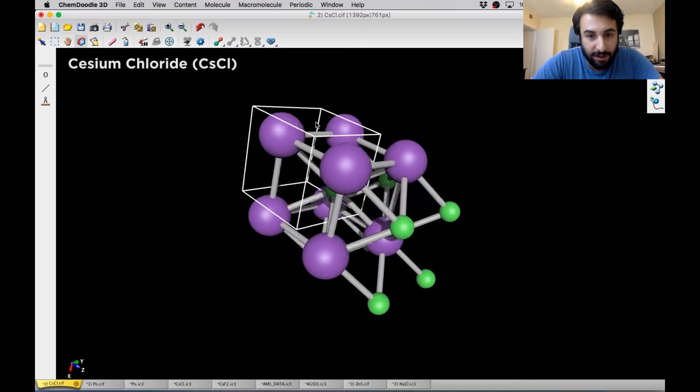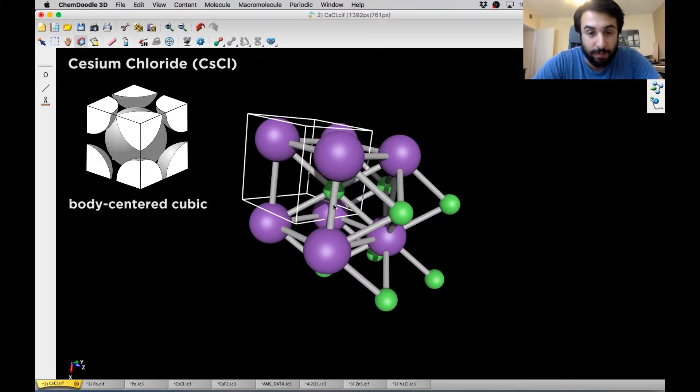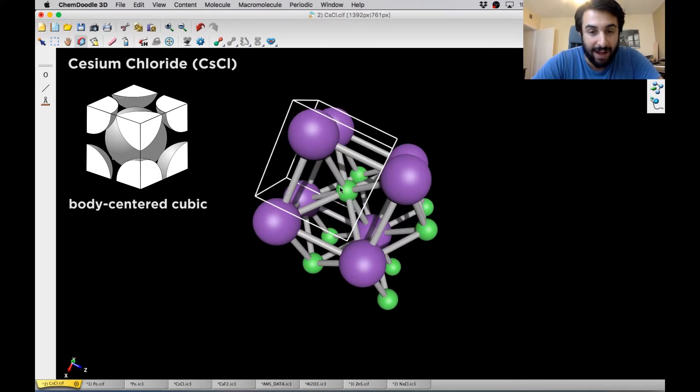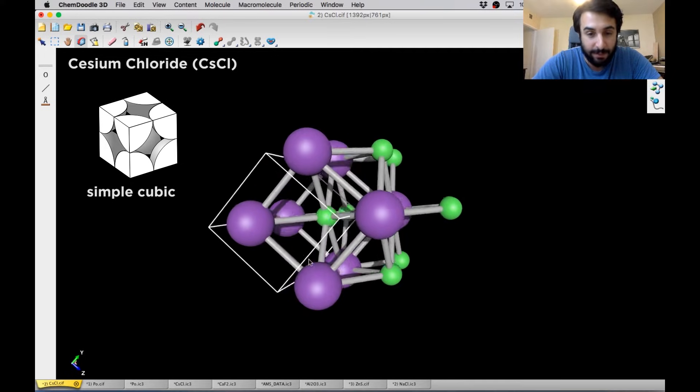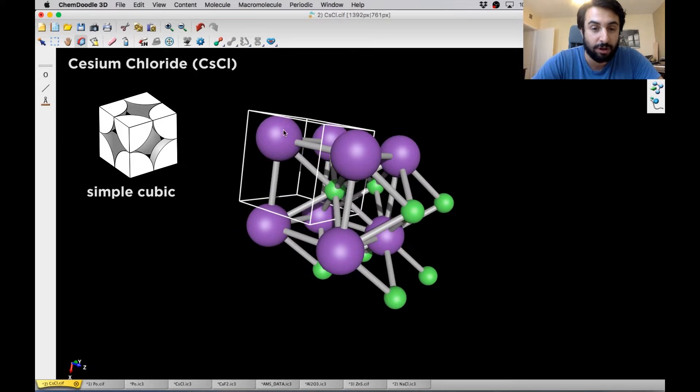And what we end up with here is something that if these were all the same element, this would be a body-centered cubic structure, which is slightly more complex because we see basically the same orientation we had before, but there's an additional atom in the center of that lattice. And so if they were all the same element, we'd be calling it a body-centered cubic structure. And a lot of metals do crystallize that way. But because this is an ionic compound and we have two different elements, we are not going to call it a body-centered cubic.